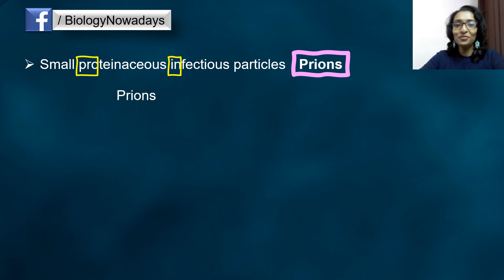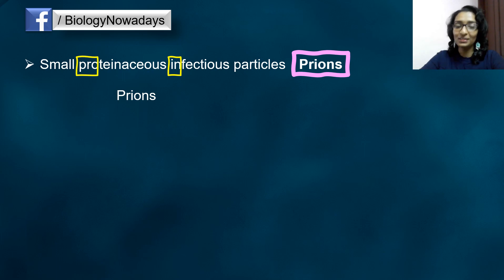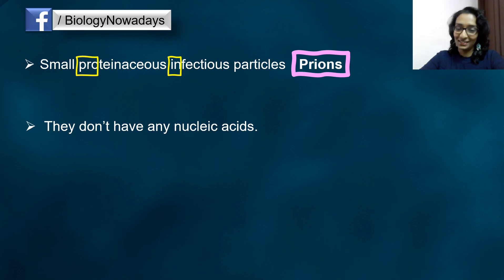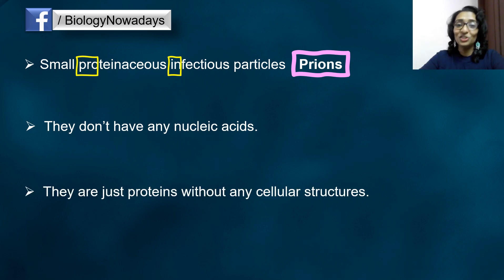An interesting feature about prions is that, unlike the normal pathogens like viruses, bacteria, fungi, or other parasites, prions don't have any nucleic acids like DNA or RNA. They are just proteins without any cellular structures, not even nucleic acids.